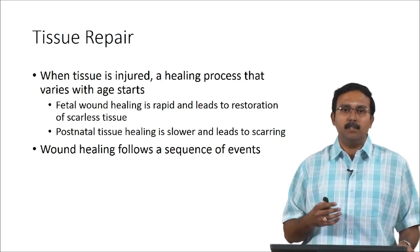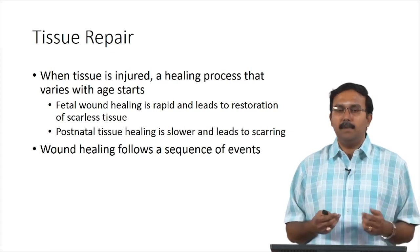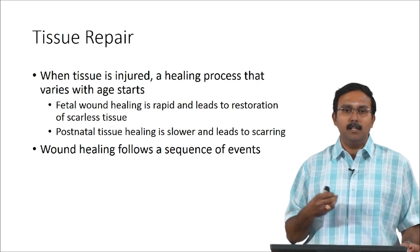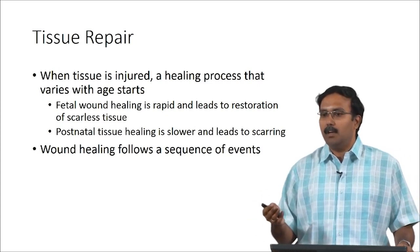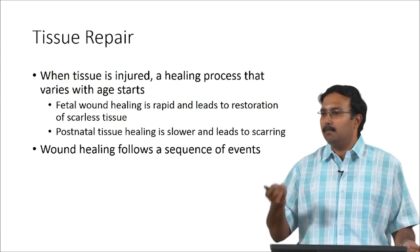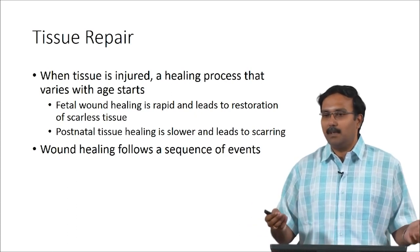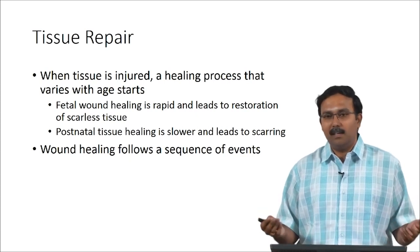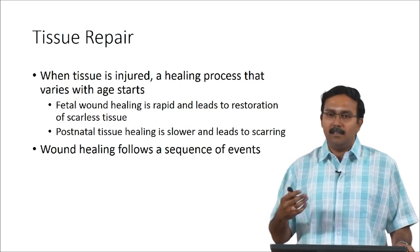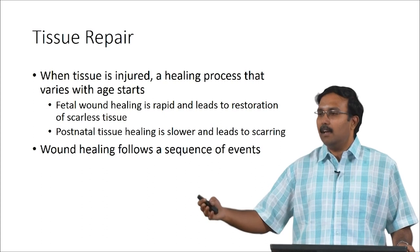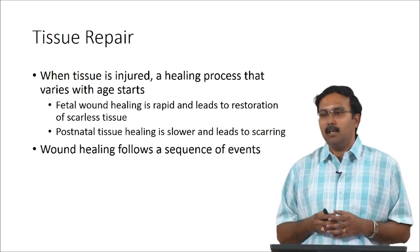When a tissue is injured the healing process, which varies with age, starts. There are two types: fetal wound healing, which is rapid and leads to restoration of scarless tissue, and postnatal healing, which is slower and leads to scarring. Many of us do not have scars from injuries in infancy because the healing process changes as you age. Scars from injuries in teens or young adulthood tend to be much more lasting.